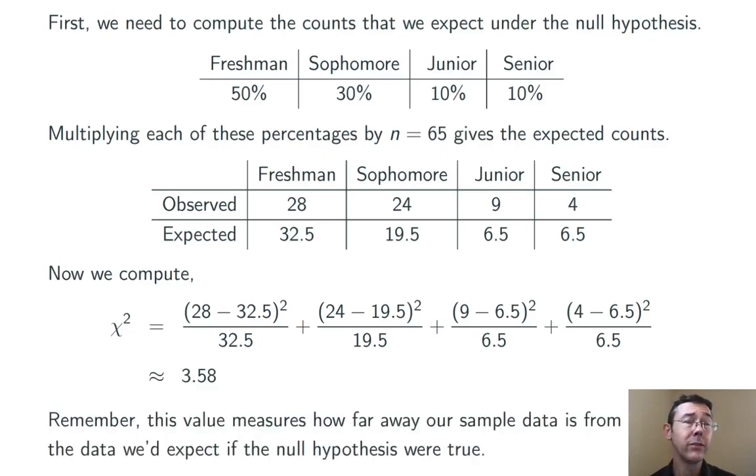Remember, this is measuring how far away our sample data is from what we would expect if the null hypothesis were true. Larger values of chi-squared, roughly speaking, indicate that the data is less compatible with that null hypothesis.